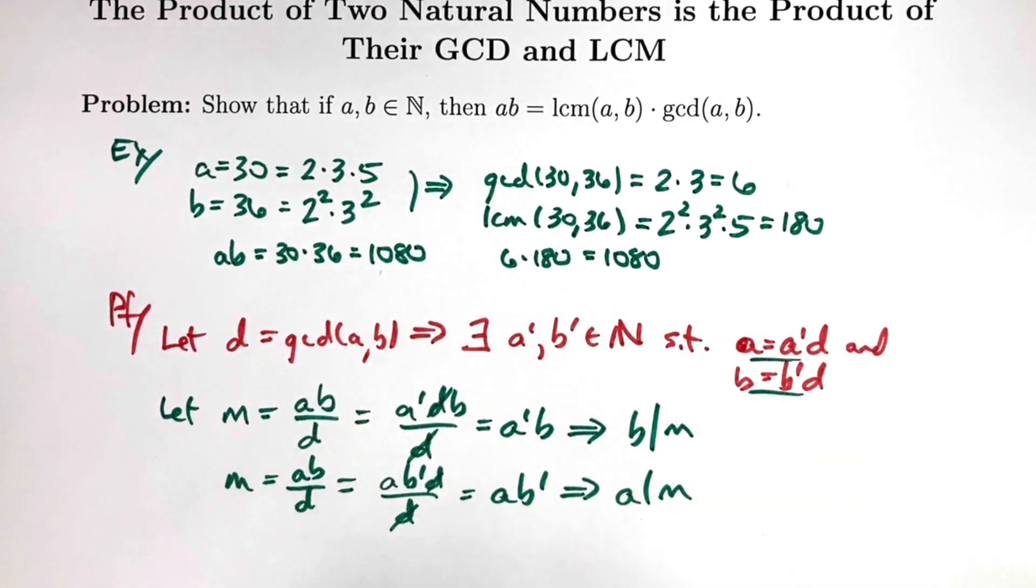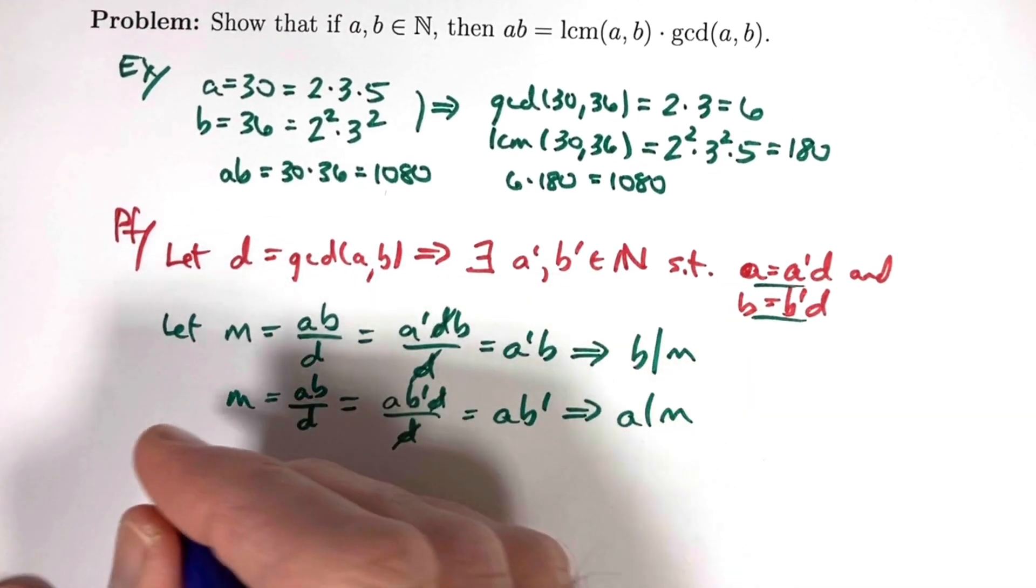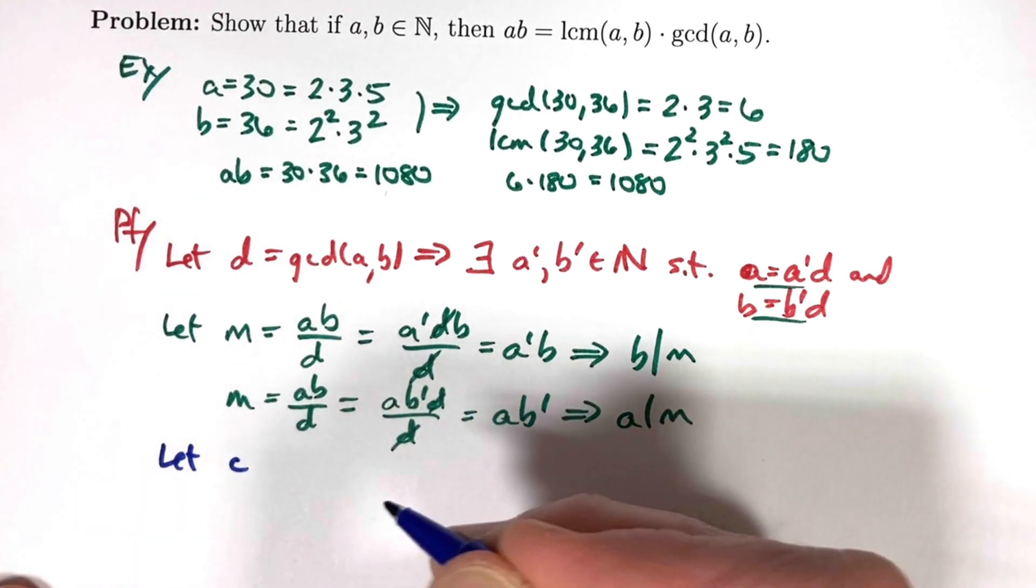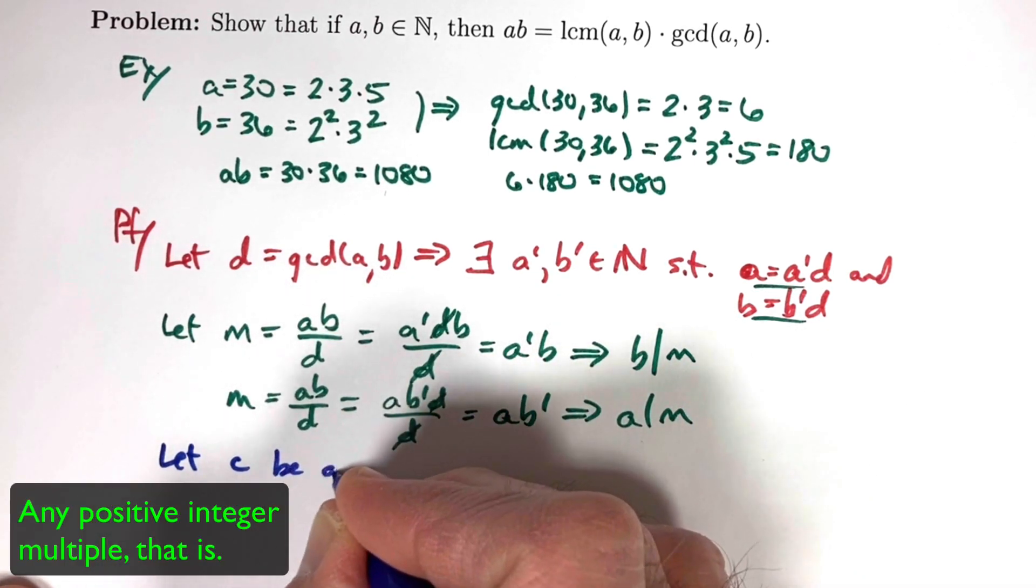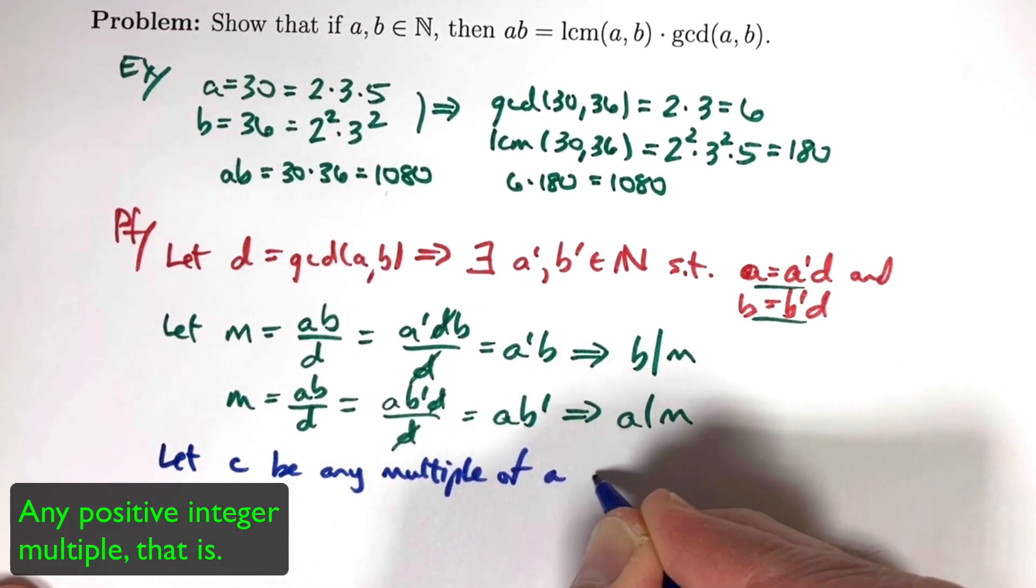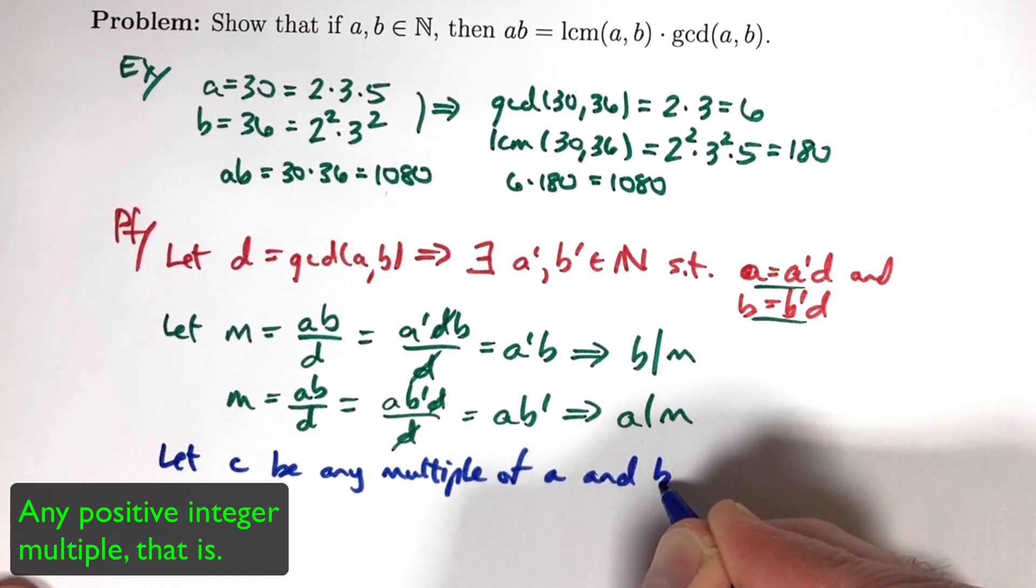How would you do that? Well, there might be a number of ways to do it. We could start by saying, let C be any multiple of A and B. And our goal would be to show that M, that we want to show is the least common multiple, is less than or equal to C. One way to do that would be to show that C divided by M is an integer. And that's going to be our strategy.